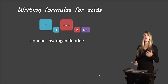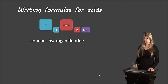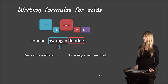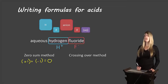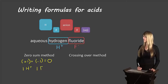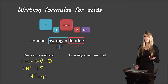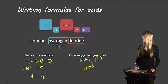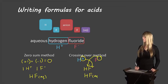Another binary acid example using the second naming method: aqueous hydrogen fluoride. Hydrogen is H+ and fluorine is F−, a 1− charge. Zero-sum method: (+1) + (−1) = 0, so we need one hydrogen and one fluoride ion — HF(aq). Crossing-over method: write H and F beside each other, cross the charges as subscripts; since both are 1 we don't write them, giving HF(aq).